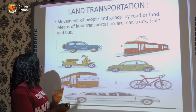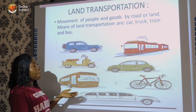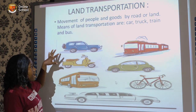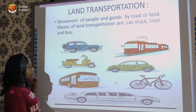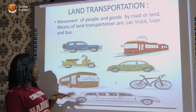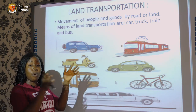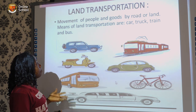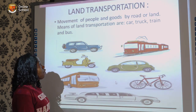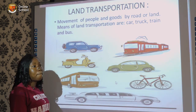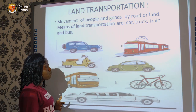There are different means we can use to transport people or goods by land. For example, we have a car, a jeep, a train, a bicycle, a limo, and a bus. Some of us use the school bus to get from one place to another. Remember, land transportation is the movement of people and goods from one place to another by road.